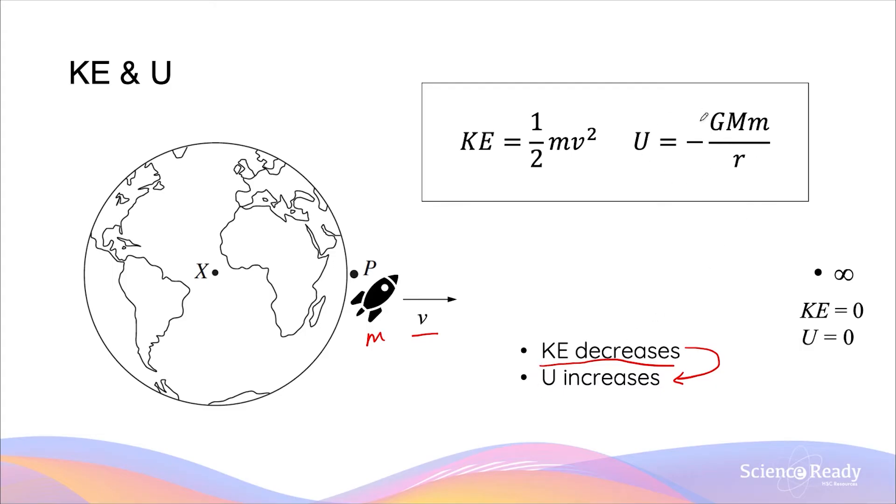We talk about the gravitational potential energy in more detail in the module on potential energy, so have a look at that if you haven't already. This rocket, as it decreases in kinetic energy, its speed will decrease as the kinetic energy is equal to half mv squared.